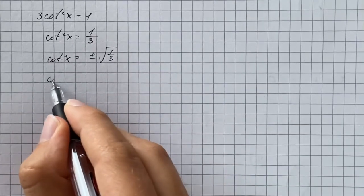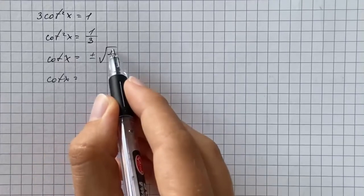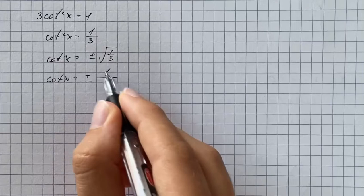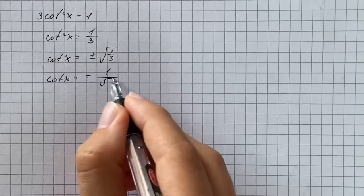Then we're going to simplify it. So we take the root of the numerator, which is going to be just 1, and over the root of 3.